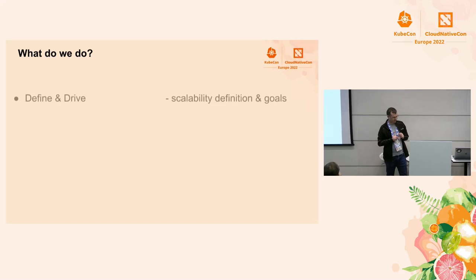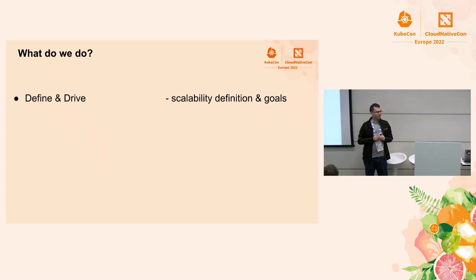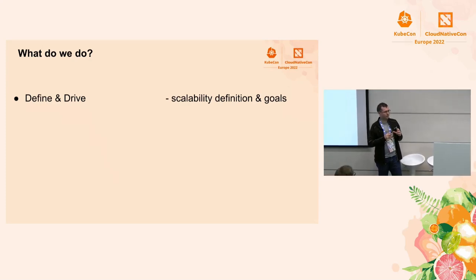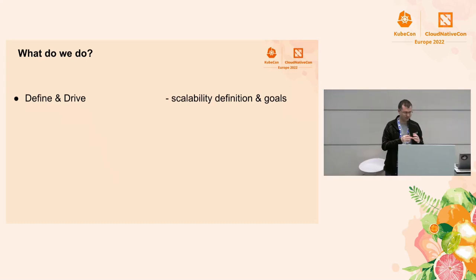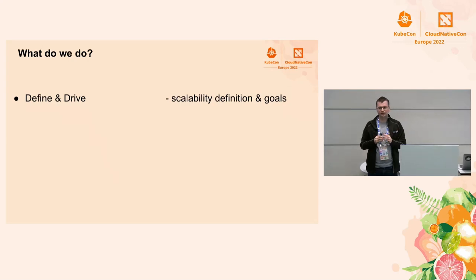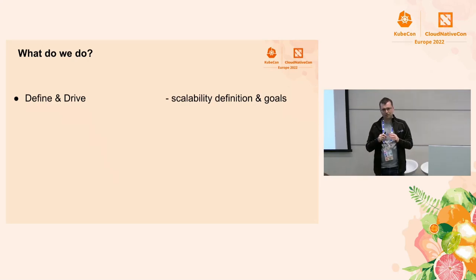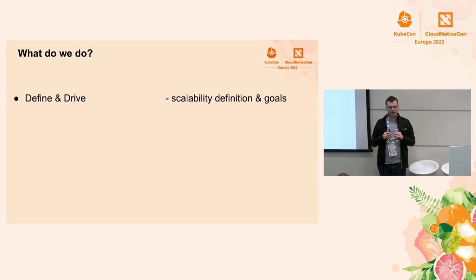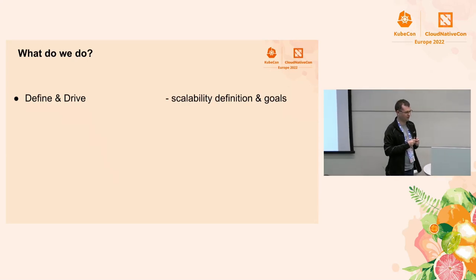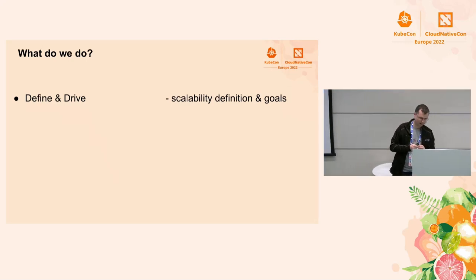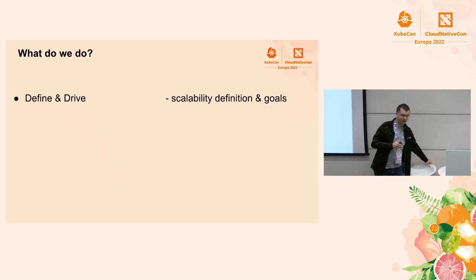The first thing we are doing is actually defining what scalability really means for Kubernetes. It means defining what it actually means, but also where we are actually heading. The core principle for any scalability-related effort is to focus on actual real-life scenarios and real-life needs. Optimization for the sake of optimization doesn't make sense because it usually complicates the system.